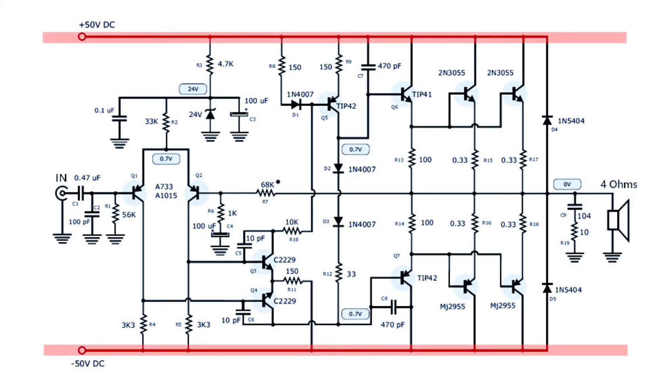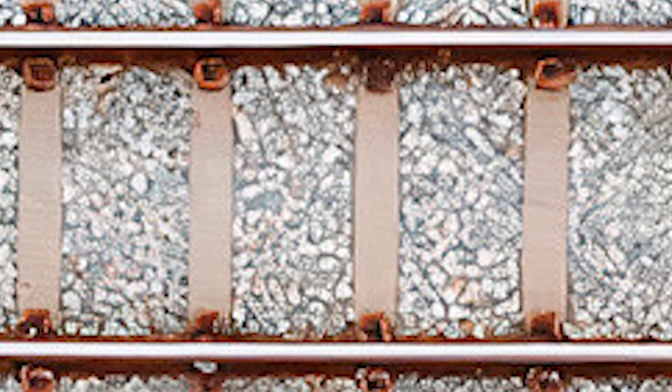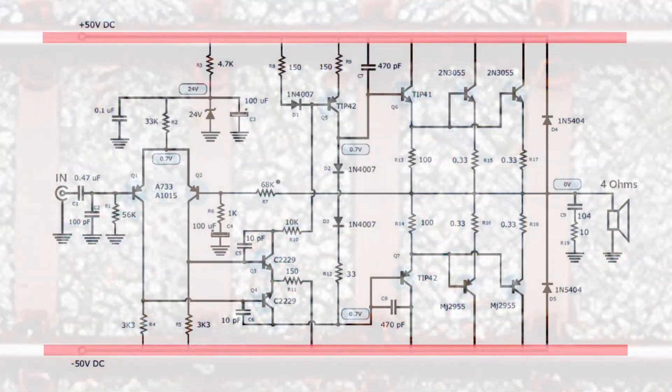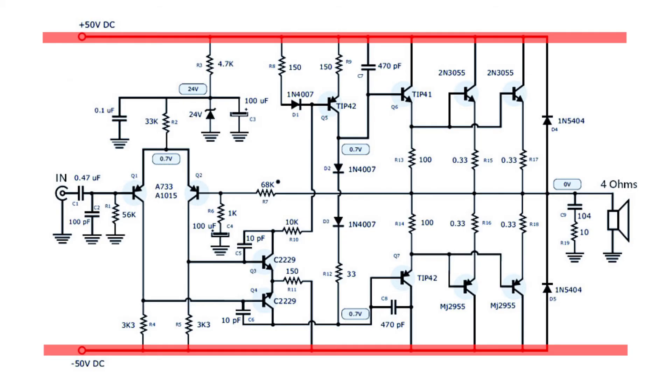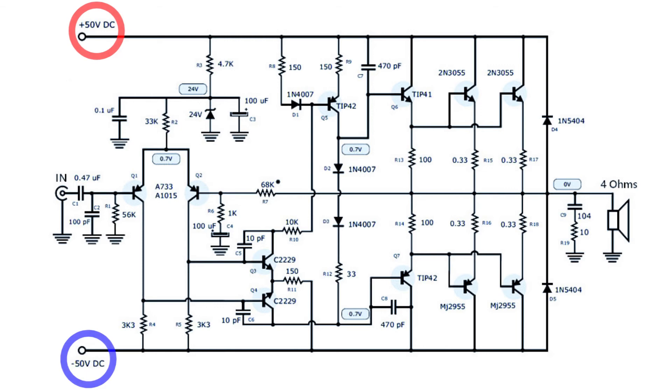In a typical schematic you might see horizontal lines that run across the page, usually at the top and the bottom, like railroad tracks. These are called the supply rails for obvious reasons. All of the components that need power tap into these lines throughout the whole schematic. It's important that you supply the correct voltage and polarity to these rails if you want your circuit to work.